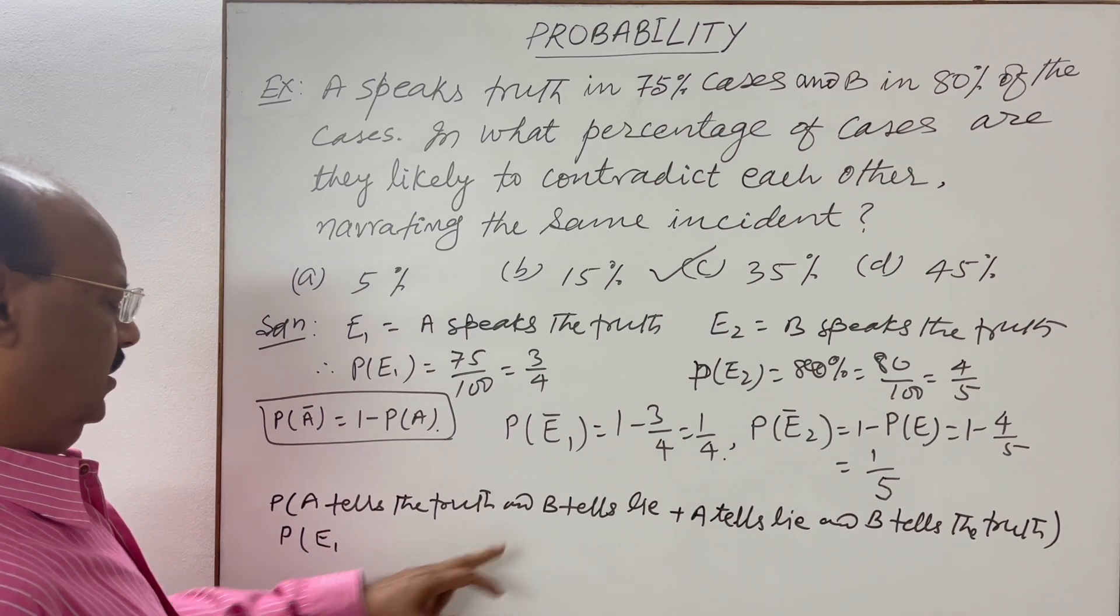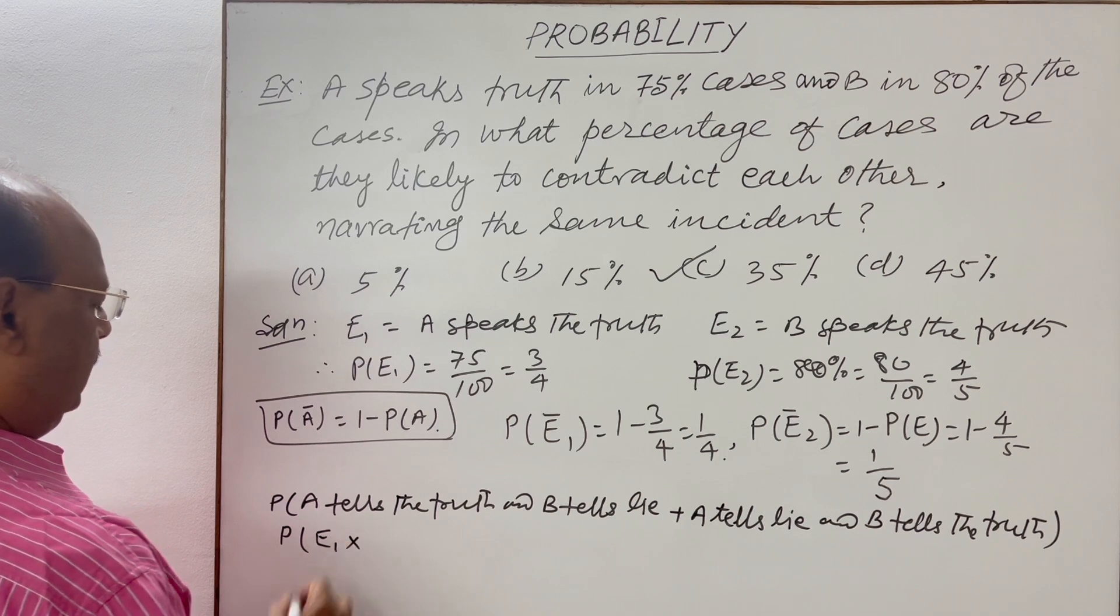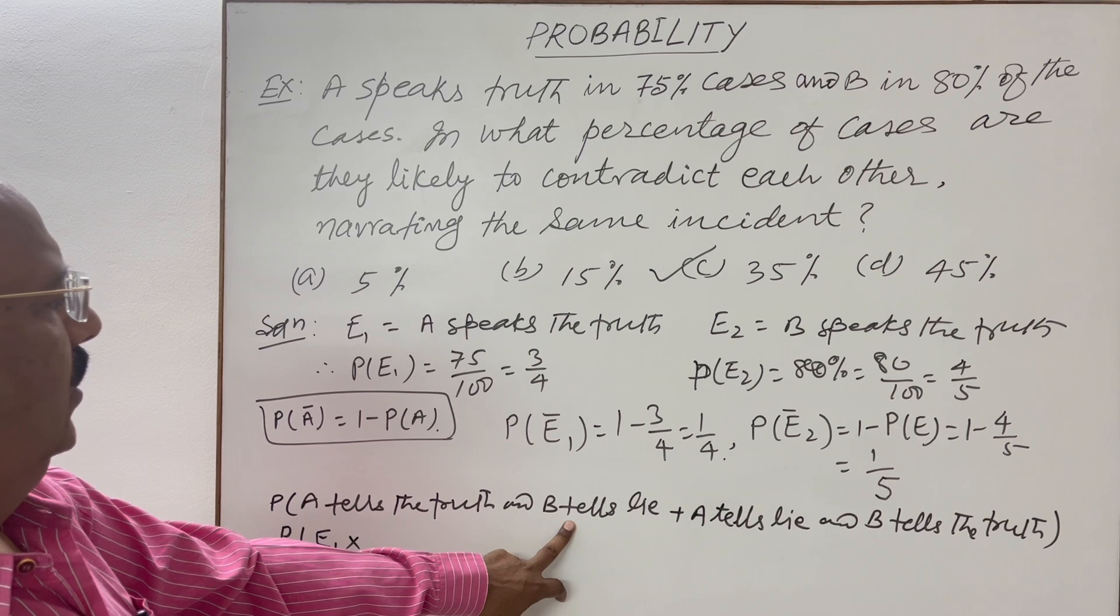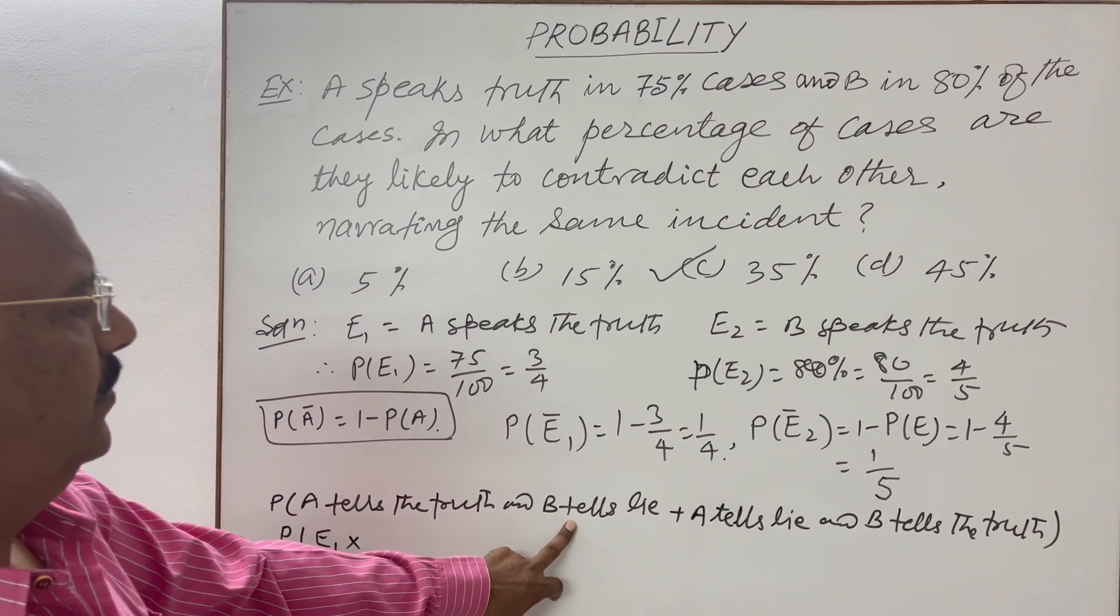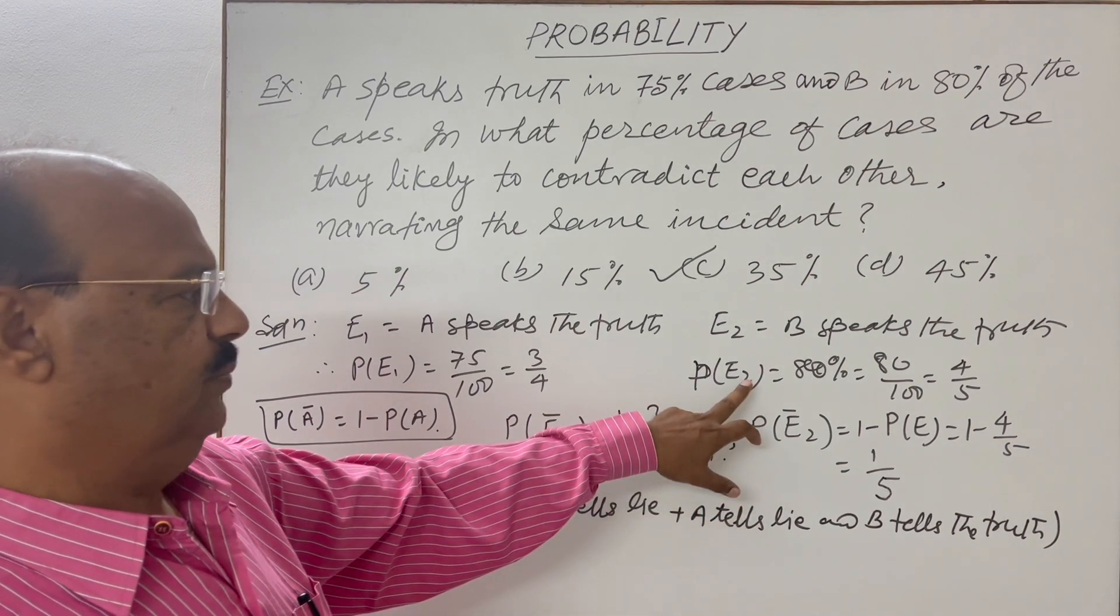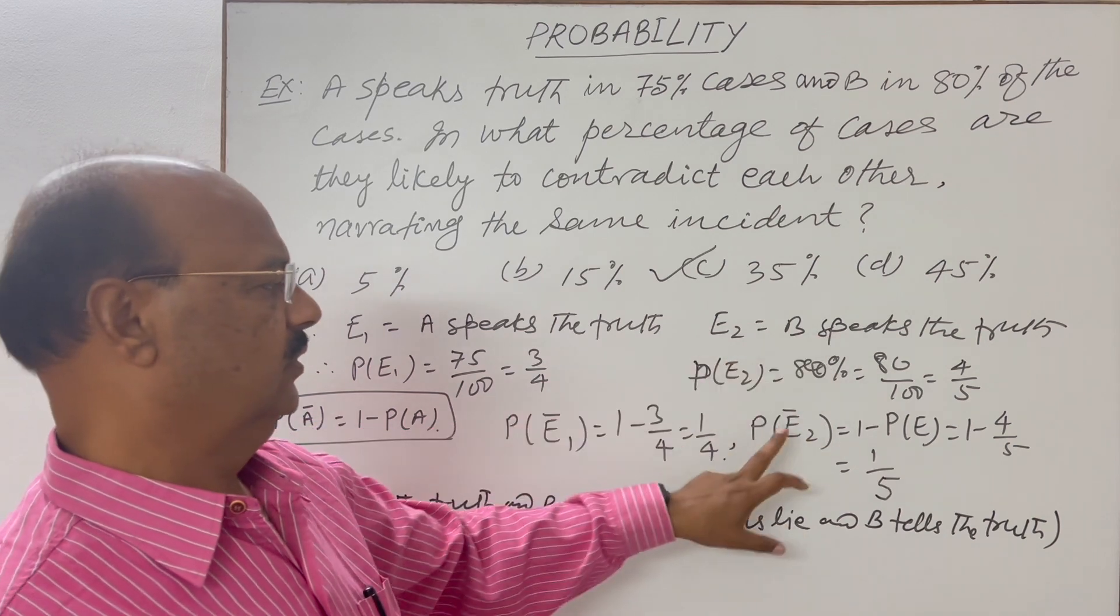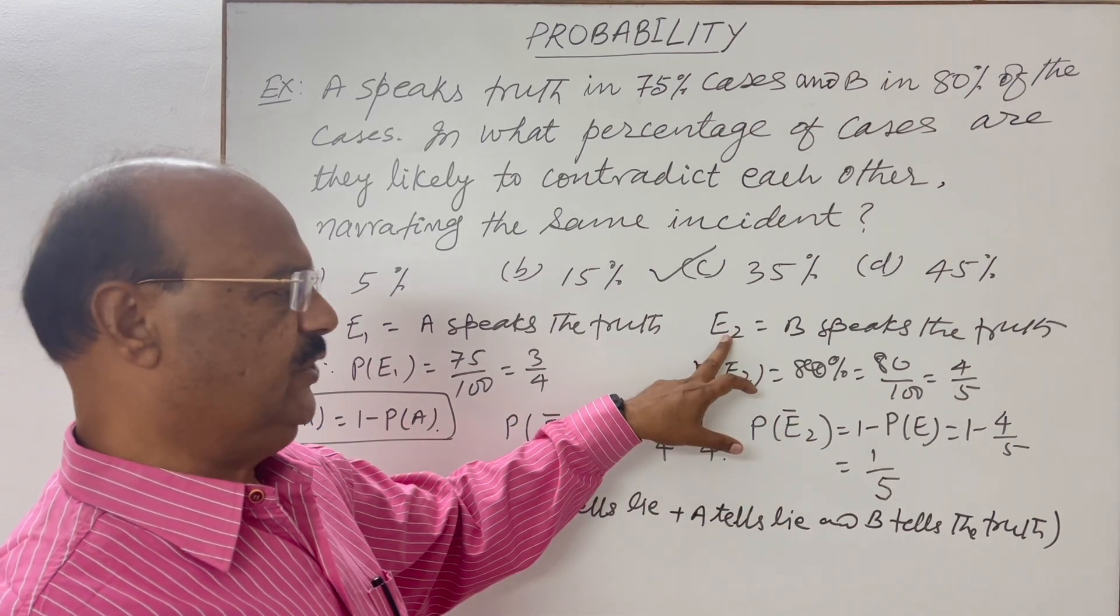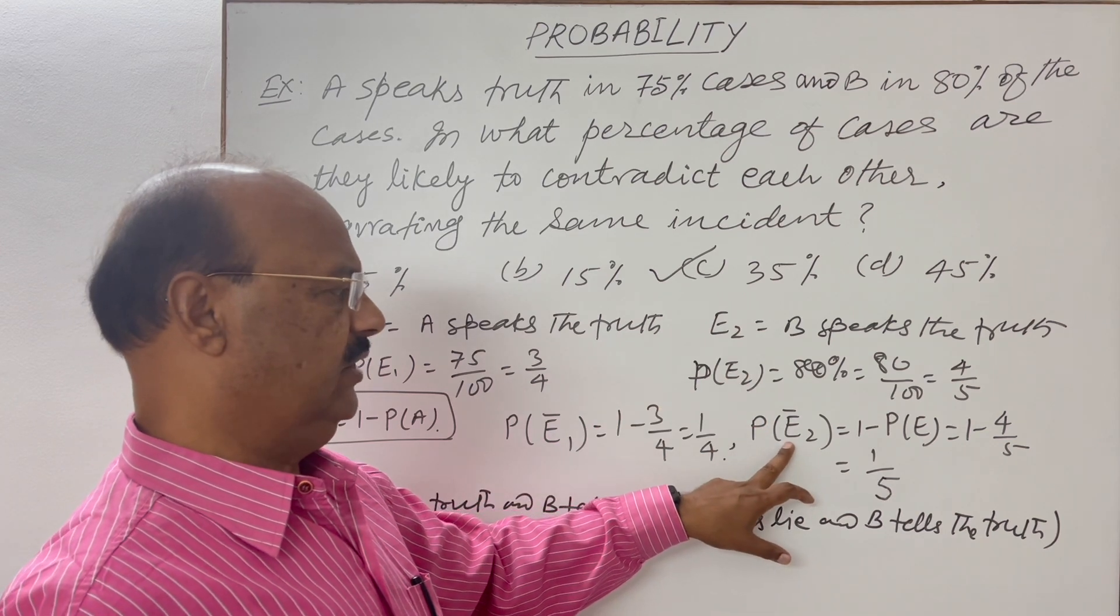B tells lie. So B tells lie is here, this is B tells truth. So not E₂, this is probability of not E₂.